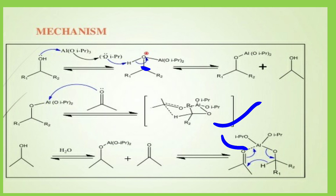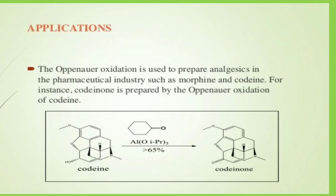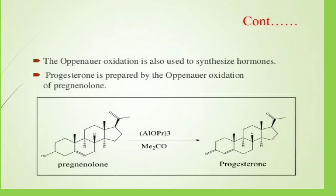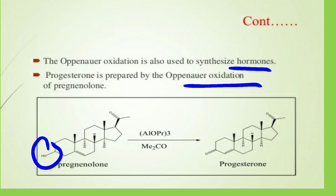Applications: Oppenauer oxidation is used in the pharmaceutical industry to prepare analgesics such as morphine and codeine. For instance, codeinone is prepared by Oppenauer oxidation of codeine — the alcohol in the codeine compound is converted to a ketone. Another application is the synthesis of hormones: progesterone is prepared by Oppenauer oxidation of pregnanolone, where the alcohol is converted to the ketone product.